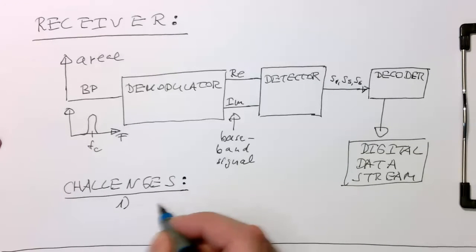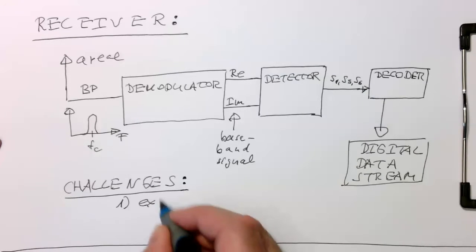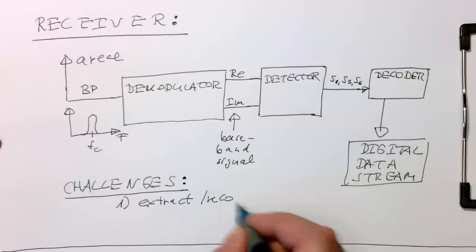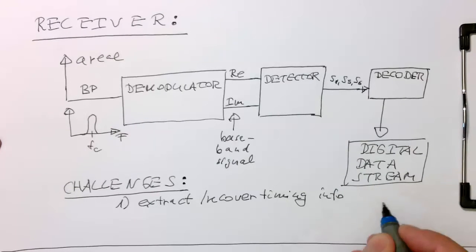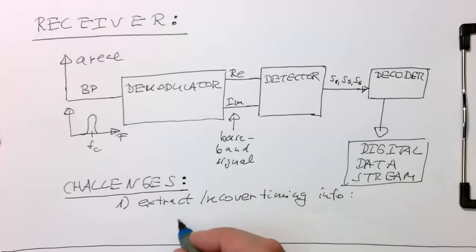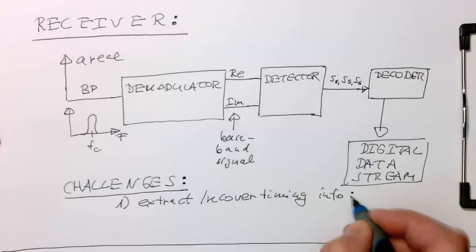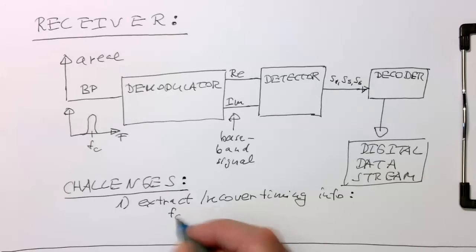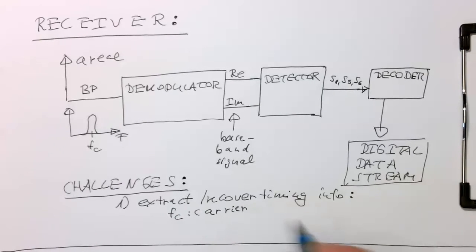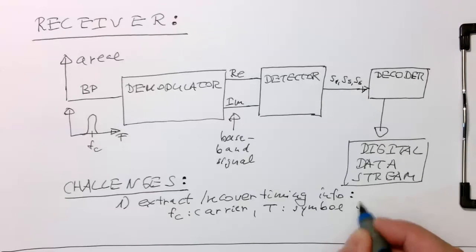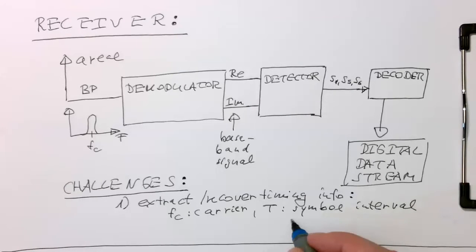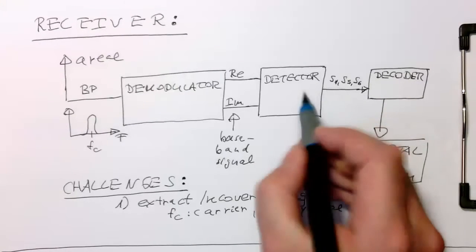Challenge number one is extract timing information. Extract or recover timing info. And this is obviously the two main timing variables we need to get back is obviously fc, so the carrier frequency. This needs to be recovered. And obviously, we also need to recover T, the symbol interval. So the symbol interval, only if we now, if we have the symbol interval, we are able to work out here when symbols start and end, which are arriving here.